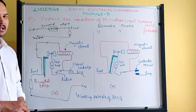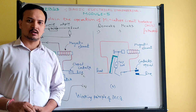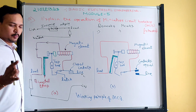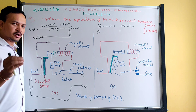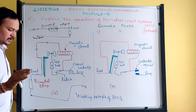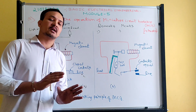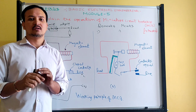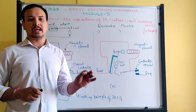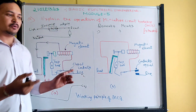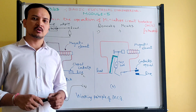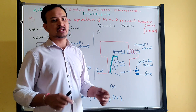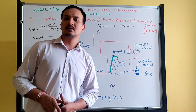Keep in mind: both fuse and MCB protect against overload as well as short circuit condition. But MCB cost is higher than fuse. However, replacement is not needed for MCB — you can just close the contacts once the fault is clear, after five to ten seconds.